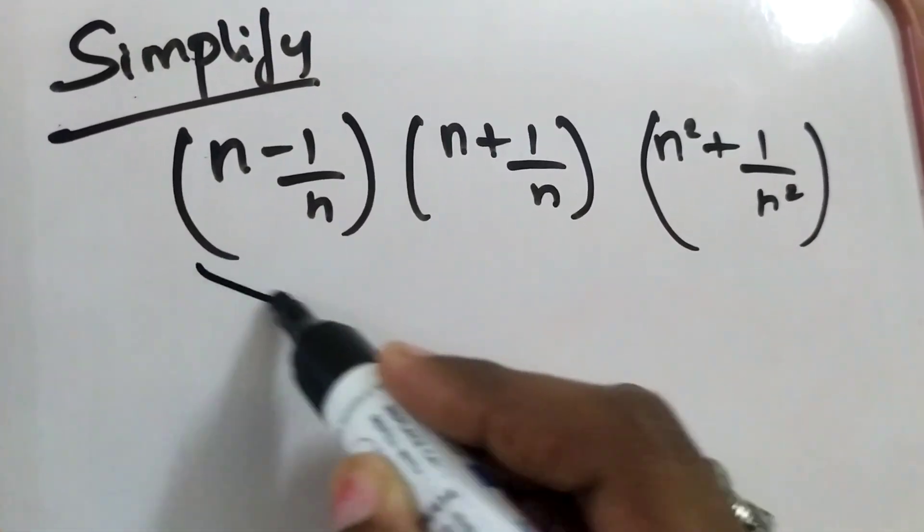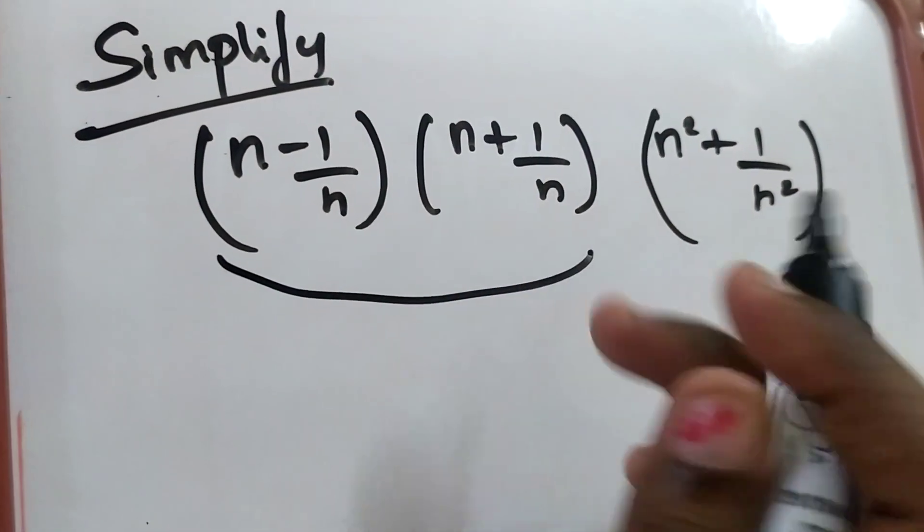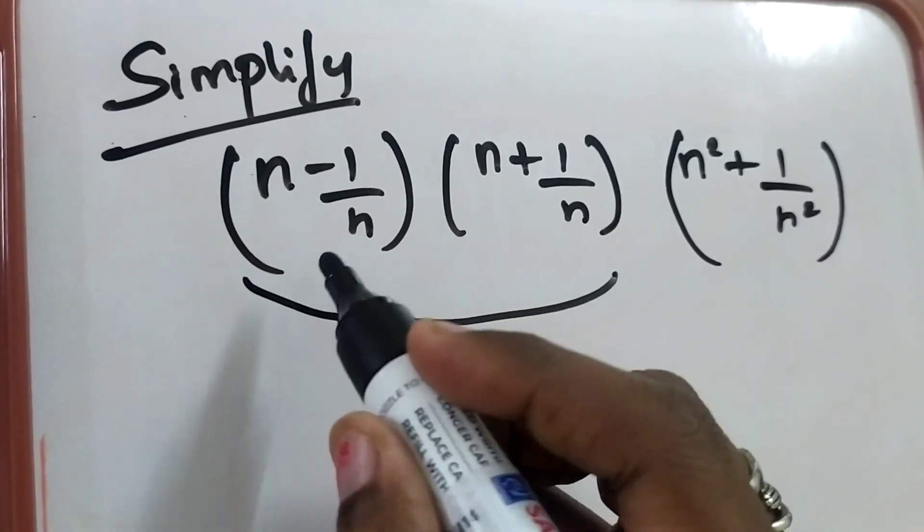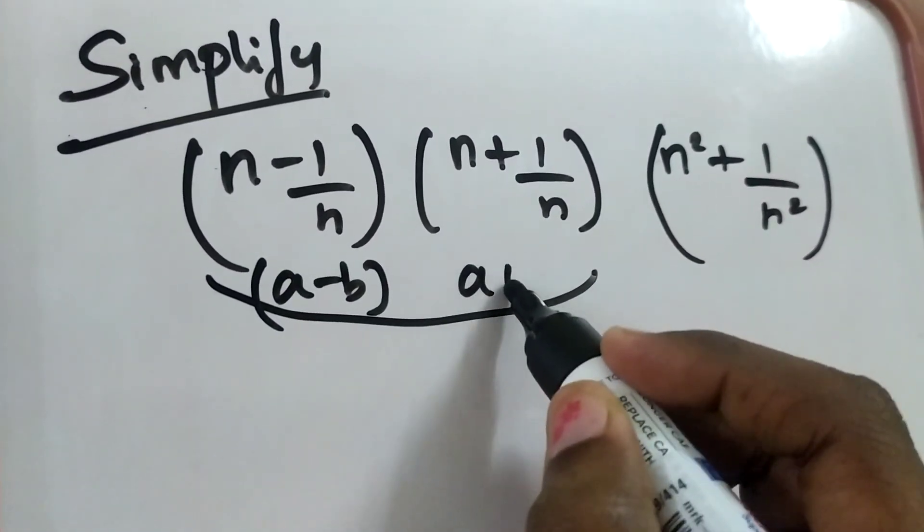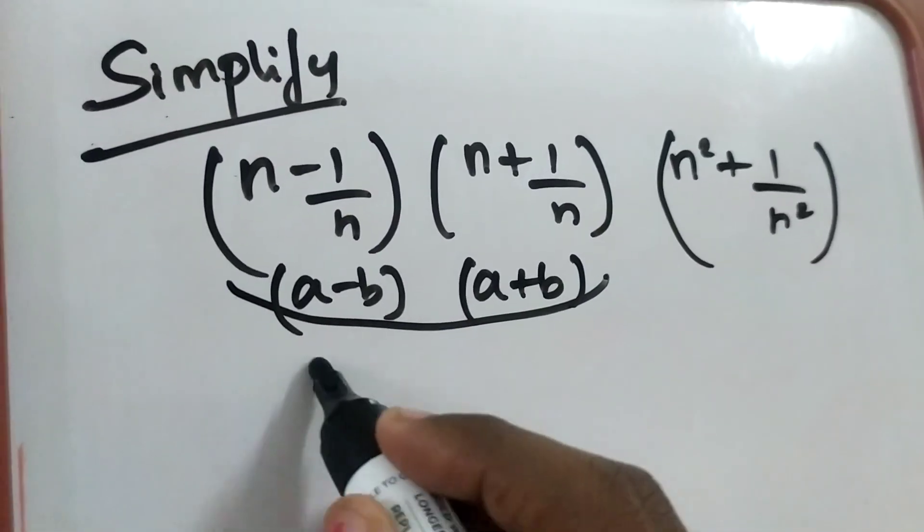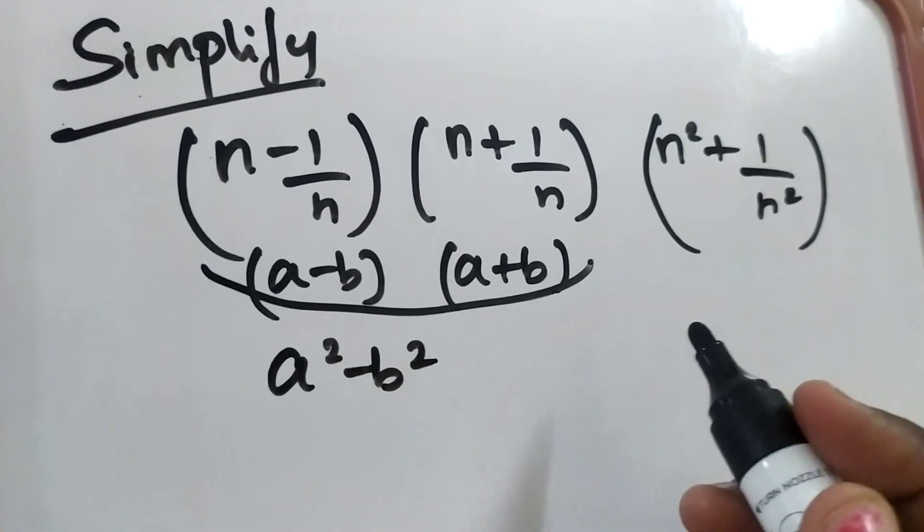So what I'm going to do is take the first two terms. This is in the format of a minus b, this is in the format of a plus b. So I can write this in the format of a square minus b square.